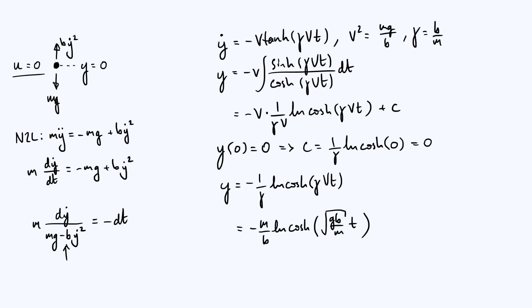We can verify this makes physical sense. Taking the limit as b → 0 and doing a Taylor expansion, we recover −½gt², which is the result for free fall with no damping. Also, at large t, cosh grows approximately exponentially, so taking the log gives a linear function — meaning y decreases at a linear rate at large times, consistent with the velocity becoming constant at terminal velocity.